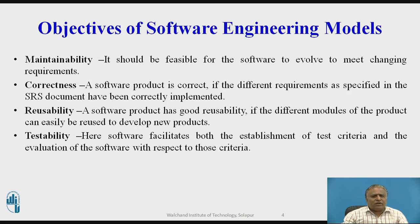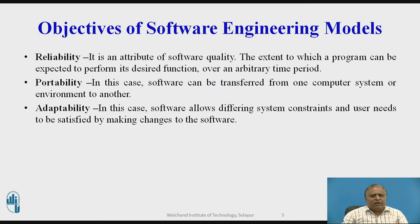The objectives of software process models include: Maintainability — it should be feasible for software to meet changing requirements. Correctness — a software product is correct if the requirements specified in the SRS document have been correctly implemented. Reusability — modules of the product can easily be reused to develop new products. Testability — software facilitates the establishment of test criteria and evaluation. Reliability — the extent to which a program performs its desired function over an arbitrary time period. Portability — software can be transferred from one system or environment to another. Adaptability — software allows different system constraints and user needs to be satisfied by making changes.